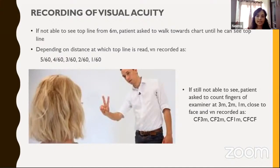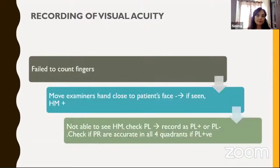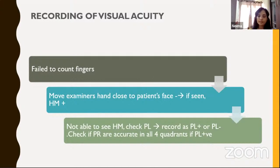If the patient still cannot see, ask him to count the examiner's fingers at three meters, two meters, one meter, or close to face — recorded accordingly as CF three meters, CF two meters, CF one meter, or counting fingers close to face. If the patient cannot even count fingers, the examiner moves his hand close to the patient's face; if the patient appreciates it, it is recorded as hand movements close to face. If not, check for perception of light — recorded as PL positive or PL negative. If PL positive, check for projection of rays in all four quadrants and mark accordingly.